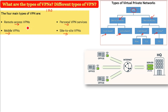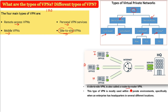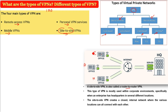Two of the most important are the site-to-site VPN, also known as router-to-router VPN. For example, if your company has one office in India, one in America, and another in Nigeria — three separate locations — this type of VPN is mostly used in corporate environments, specifically when an organization has headquarters or locations in different countries. The site-to-site VPN creates a closed internal network using tunnels where various locations connect with each other over the public internet.